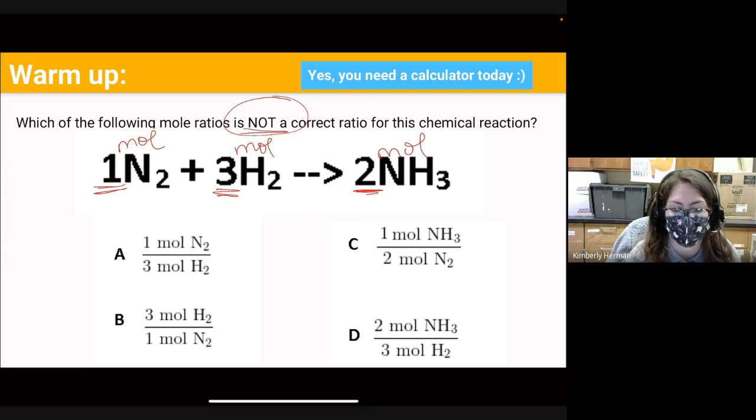We're looking for which one's not correct, so systematically go through and check as you're going through. Is there 1 mole of N₂? Yes. Are there 3 moles of H₂? Yes. So it can't be that one because that one's actually correct.